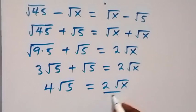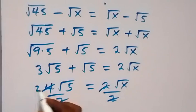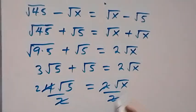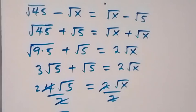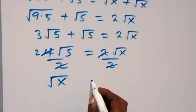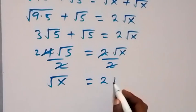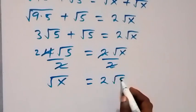Dividing both sides by 2, the 2 cancels, and we get root x equals 2 root 5.